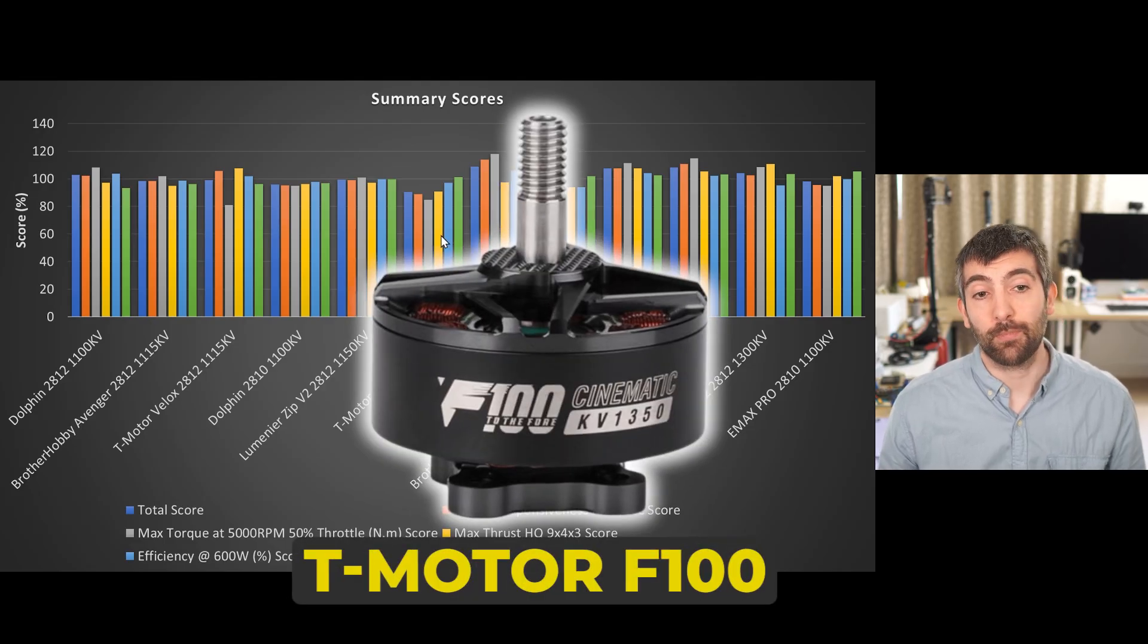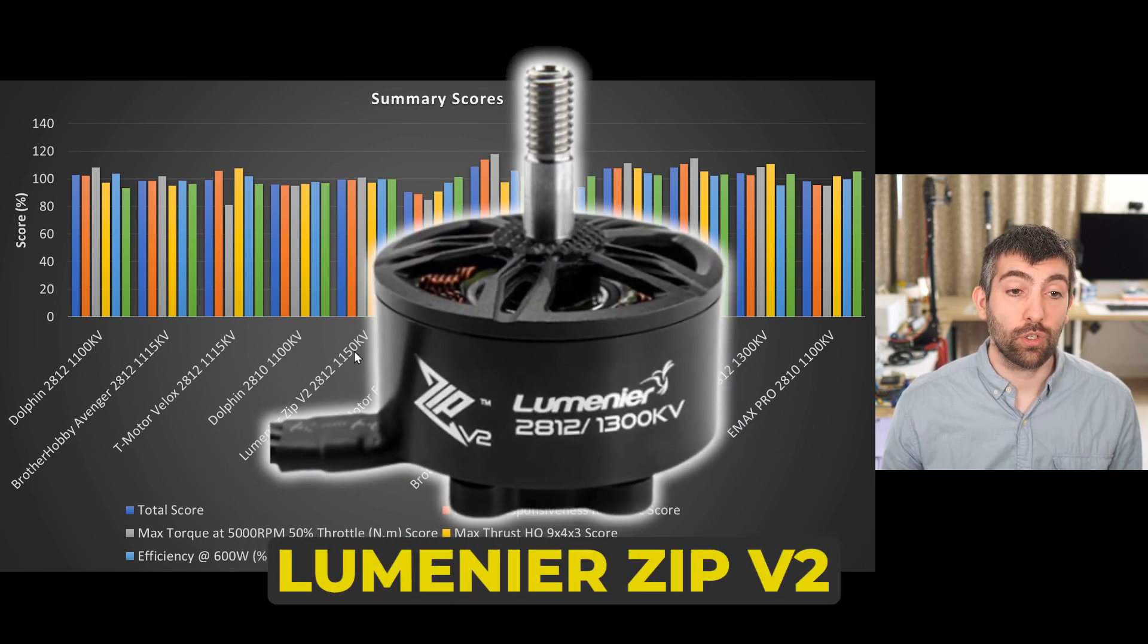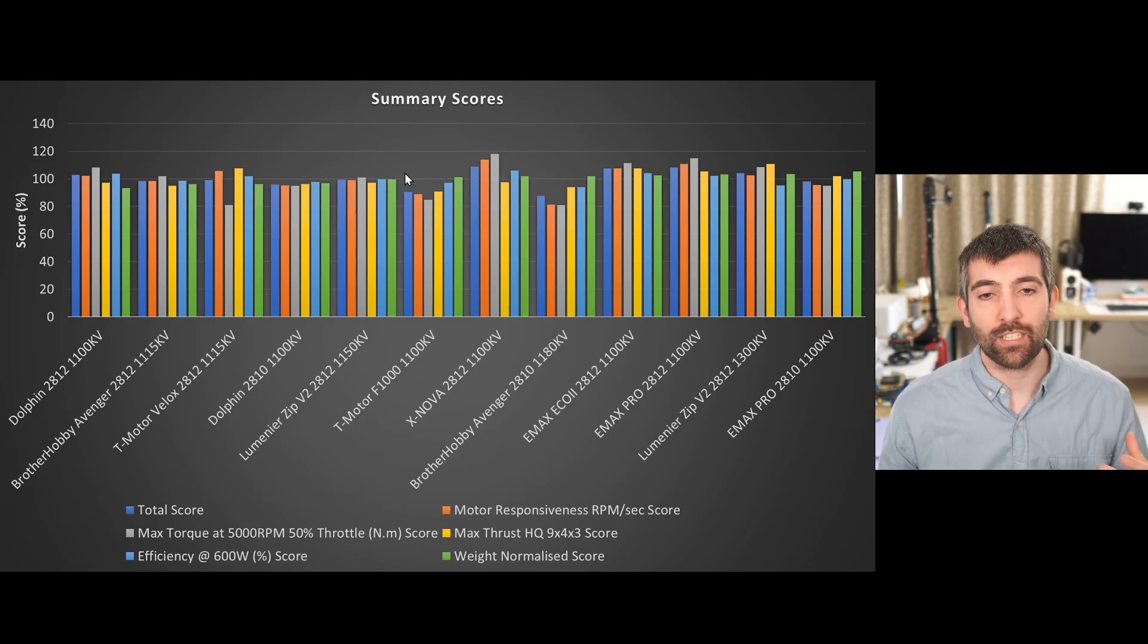The T-Motor F1000, now we're into the lower half of the group that I tested. It's a lightweight motor but it's only got moderate performance and so it doesn't come particularly high up on the scores. The Lumineer Zip V2 2812 1150, a great all-rounder. It's not let down in any area. It's a lightweight 2812 motor and so it could be a pretty good choice if you're looking for just an all-around lightweight motor. It's not the best performer on any of the particular tests, and obviously with the likes of the Emax series, it's got some stiff competition.